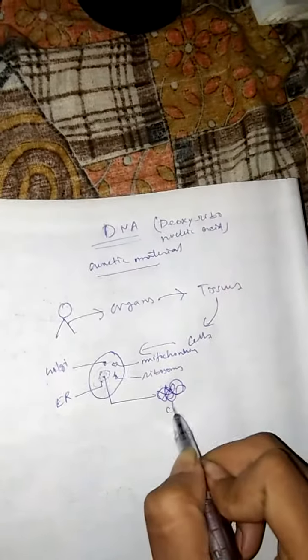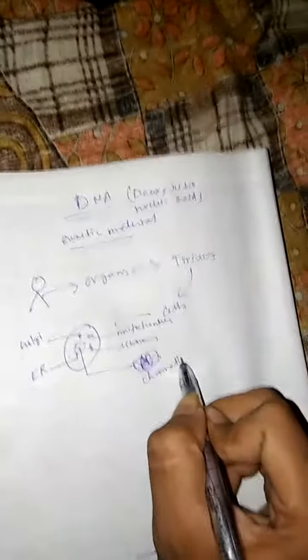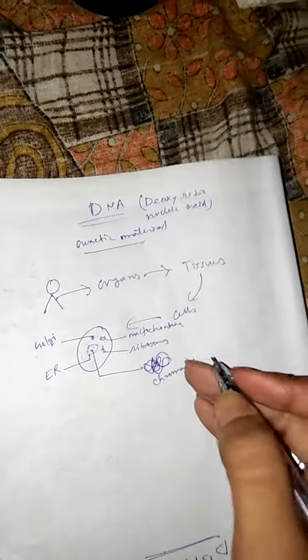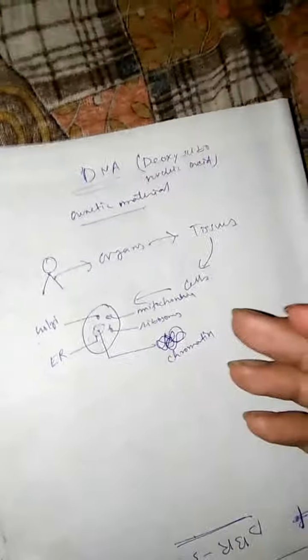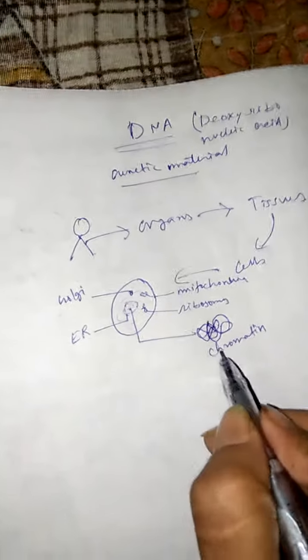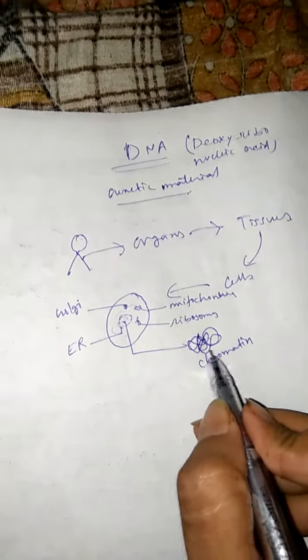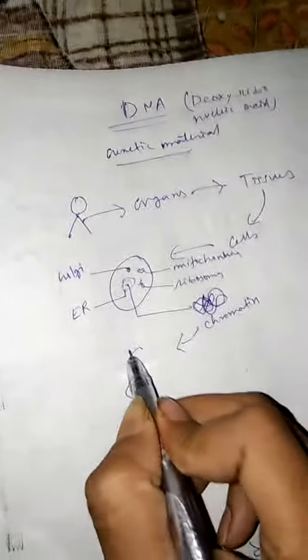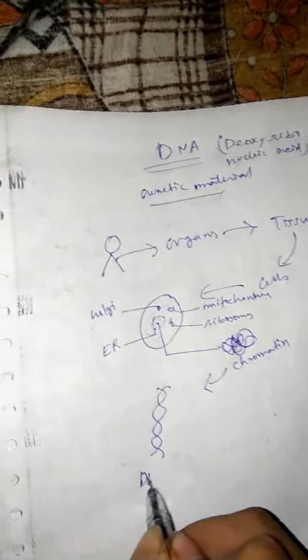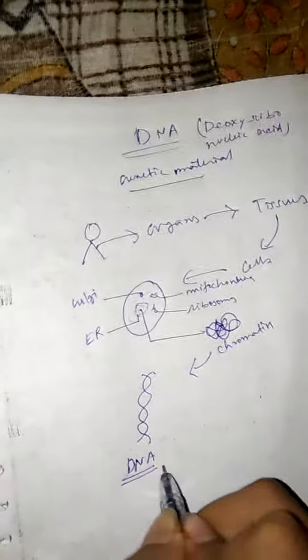What are they? These chromatin are chromosomes which are supercoiled in a supercoil manner. When we reverse this supercoil structure of chromatin, we get a double helical structure which is known as DNA, that is deoxyribonucleic acid, which is the genetic material of any living organism.